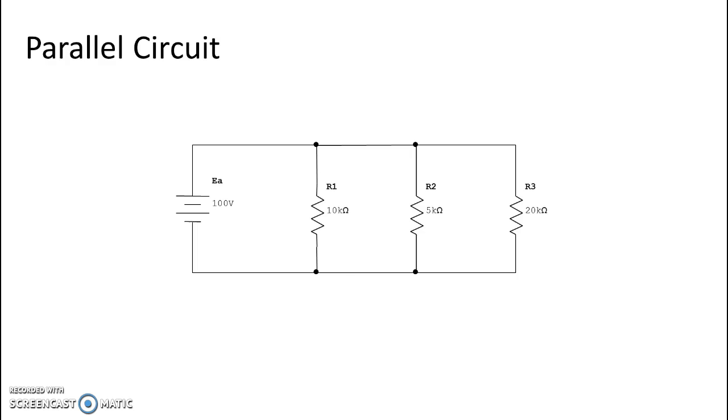So in series circuits we only had one path for current, but here in our parallel circuit you can see from the red lines I'm putting up that there are multiple paths for current to flow.